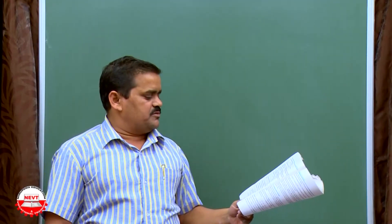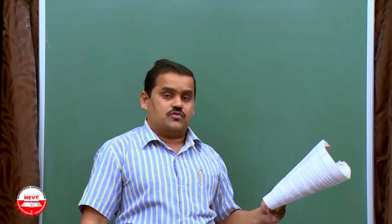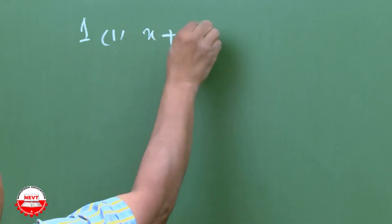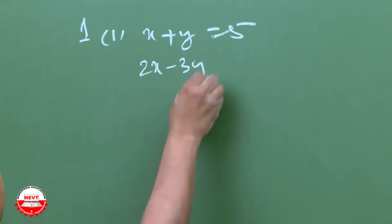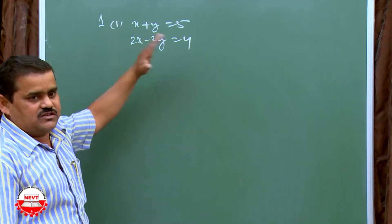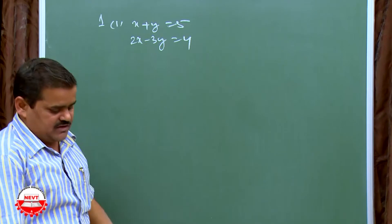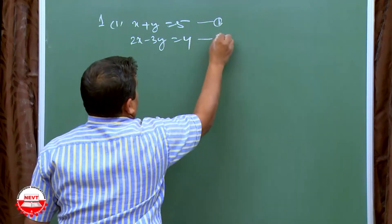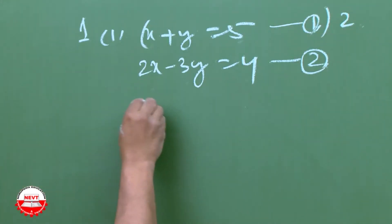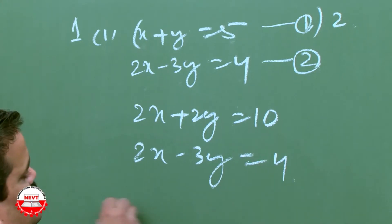Now Exercise 3.4: solve pairs of linear equations by the elimination method and substitution method — that means equating coefficients. These are easy. For Question 1, first part: X plus Y is equal to 5 (equation 1) and 2X minus 3Y is equal to 4 (equation 2). The coefficient of X in equation 1 is 1, so multiply equation 1 by 2 to get 2X plus 2Y equals 10. Now subtract equation 2 from this.